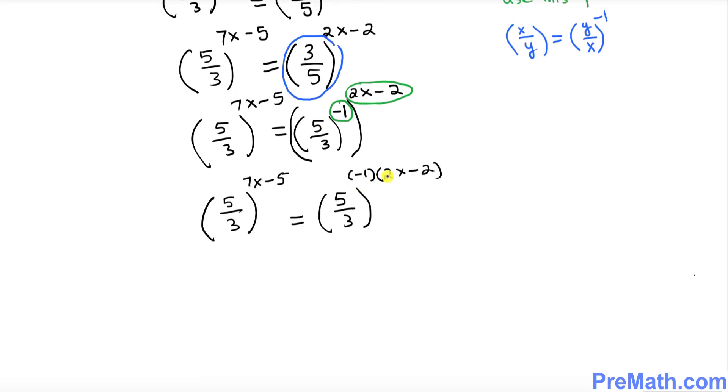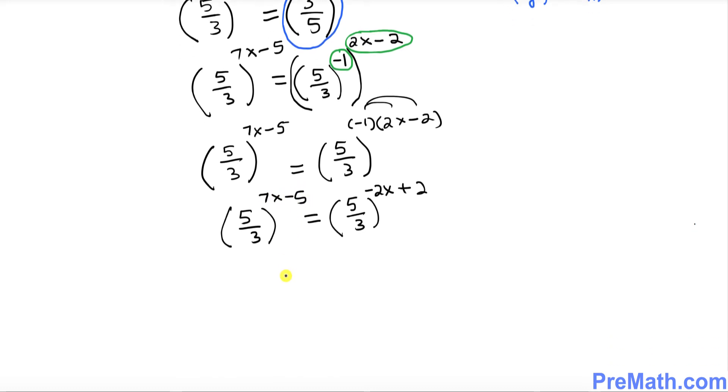This is what we multiply out. Let's distribute once again. So that becomes 5 over 3 to the power negative 2x plus 2 on the right hand side, and 5 over 3 to the power 7x minus 5 on the left hand side.